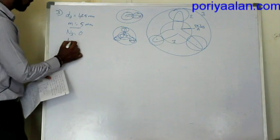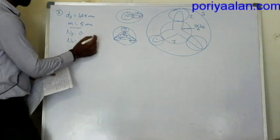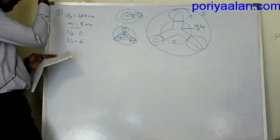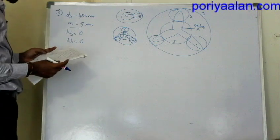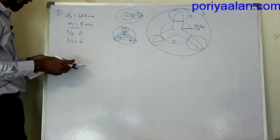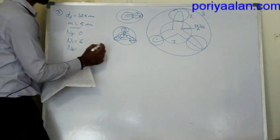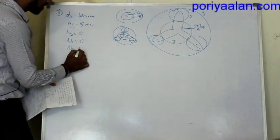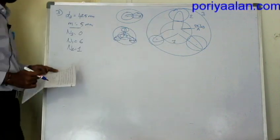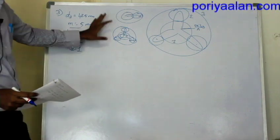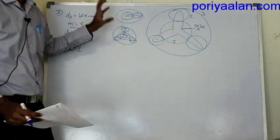Then, N1 is stationary — 6 revolutions counterclockwise, so it is 6 revolutions. N1 is stationary. This is given. If you have a table, we will set it up. This is an epicyclic gear train.